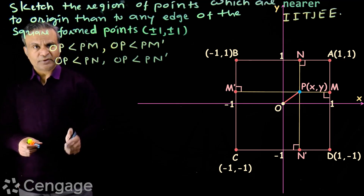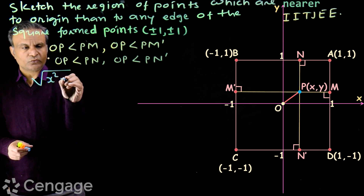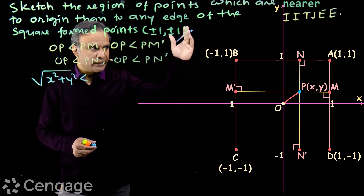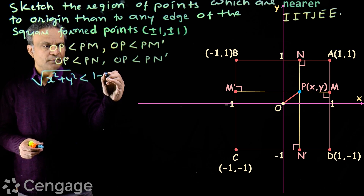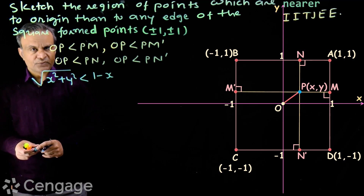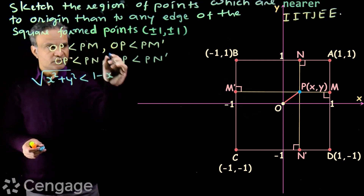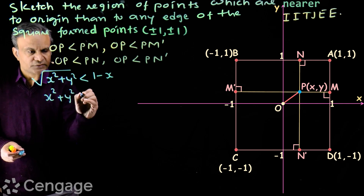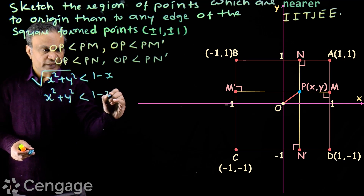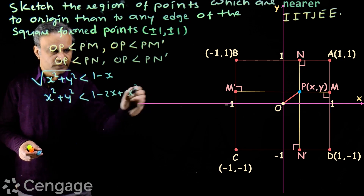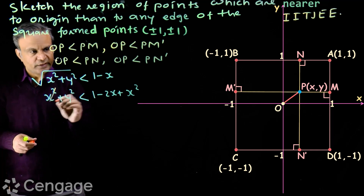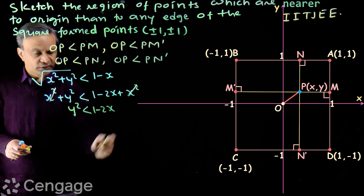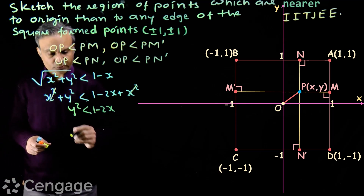OP is √(x² + y²), and the distance PM — the distance of point P from side AD — is (1 - x), since x is less than 1. Squaring both sides, we get x² + y² < (1 - x)², which expands to x² + y² < 1 - 2x + x². Cancelling x² from both sides, we get the inequality y² < 1 - 2x.